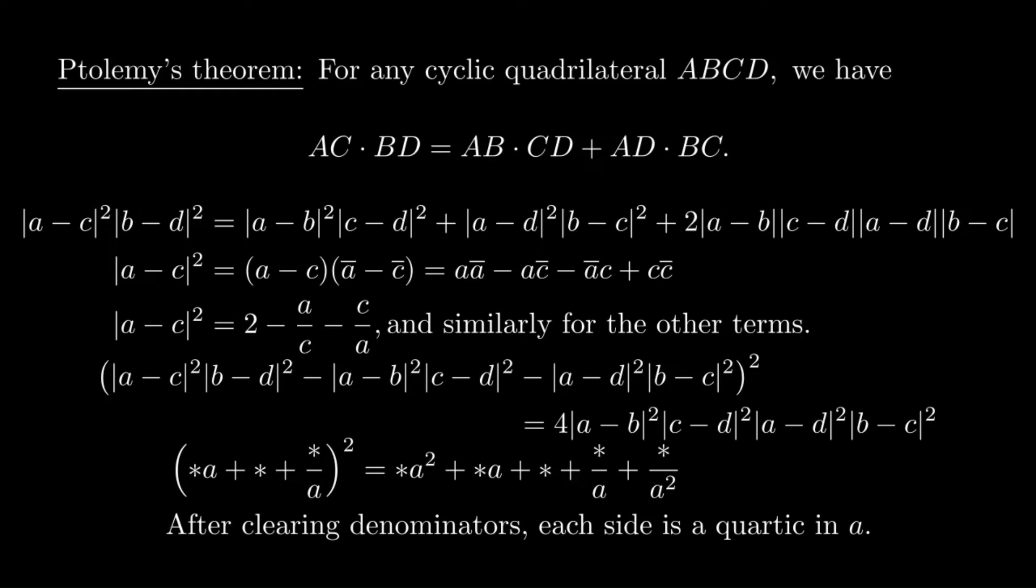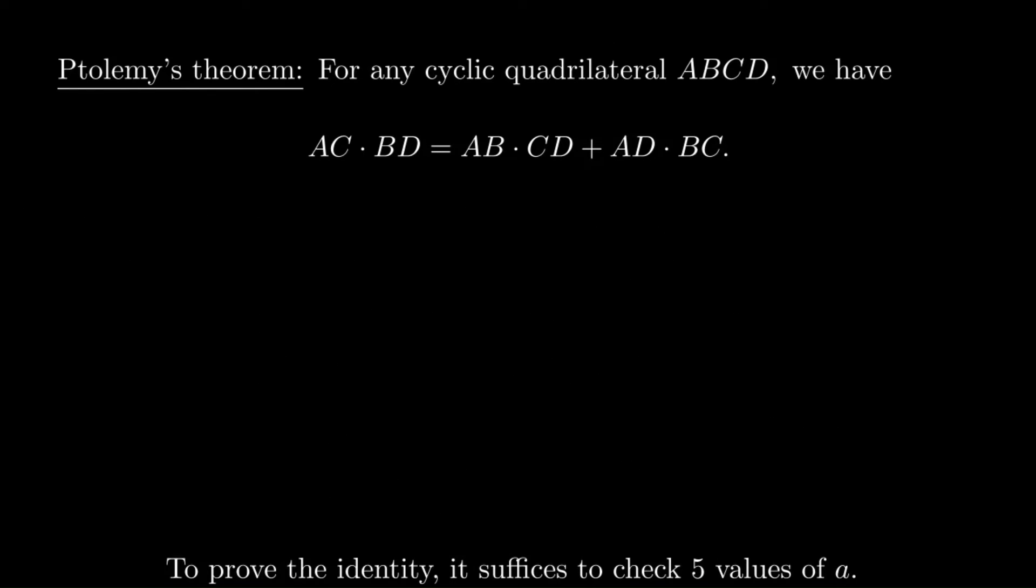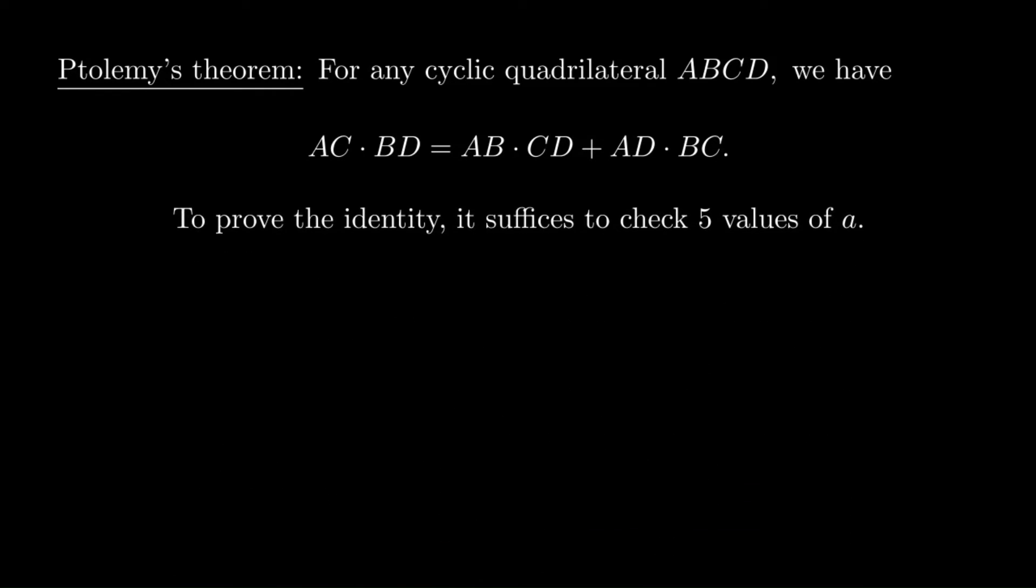Checking this identity directly would take quite a bit of work. What we'll do to get around that is just use the fact that if we have two polynomials of degree 4 and they agree at five places, they're automatically equal. All we have to do is check that the identity is true for five values of a. That's equivalent to checking that the statement of Ptolemy's theorem is true for five locations of the point a.